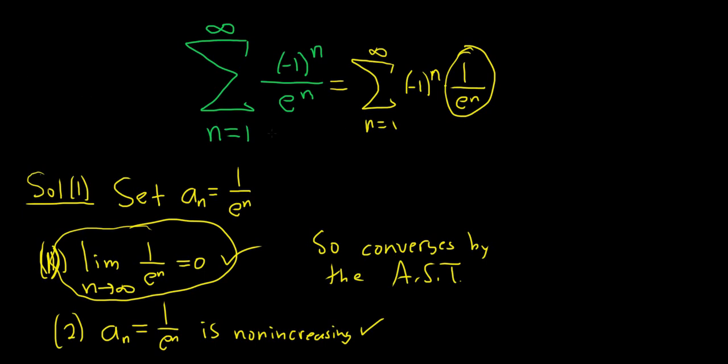All right, let me show you the other solution. Solution two, this is the way I would do it. You can write your infinite sum using properties of exponents like this: (-1/e)^n, right? Because this is to the n and this is to the n, so you can use properties of exponents to write it like this.